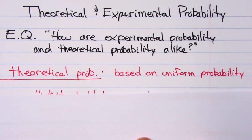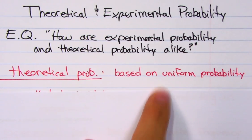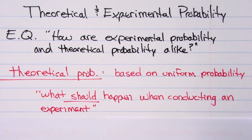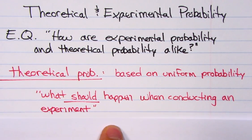Let's talk about theoretical probability. It's based on uniform probability, which basically means what should happen when conducting an experiment.